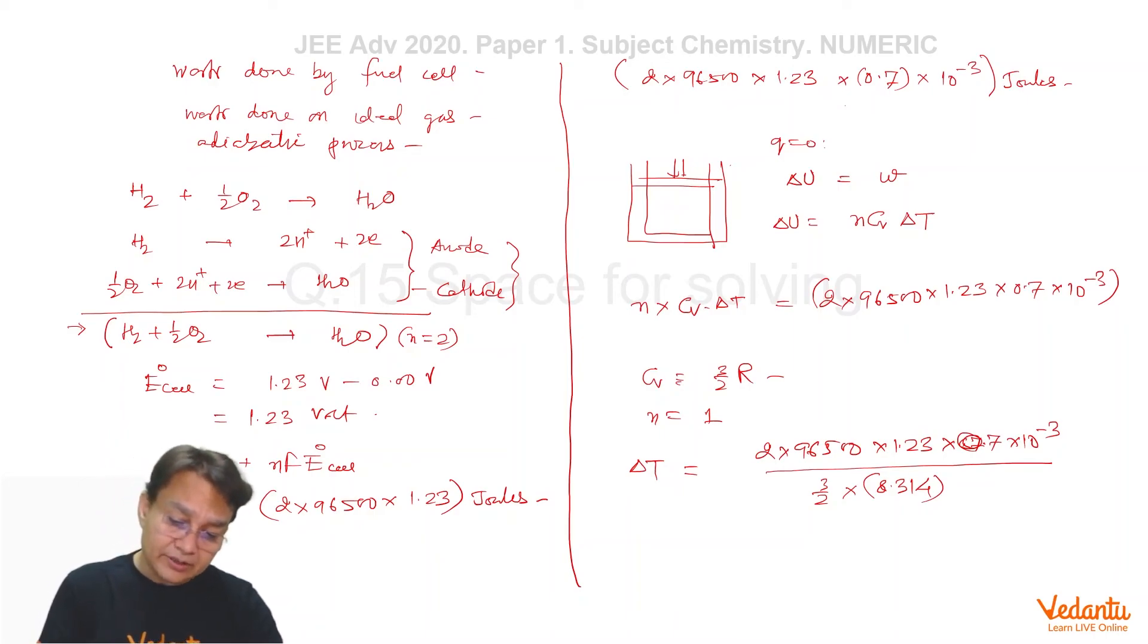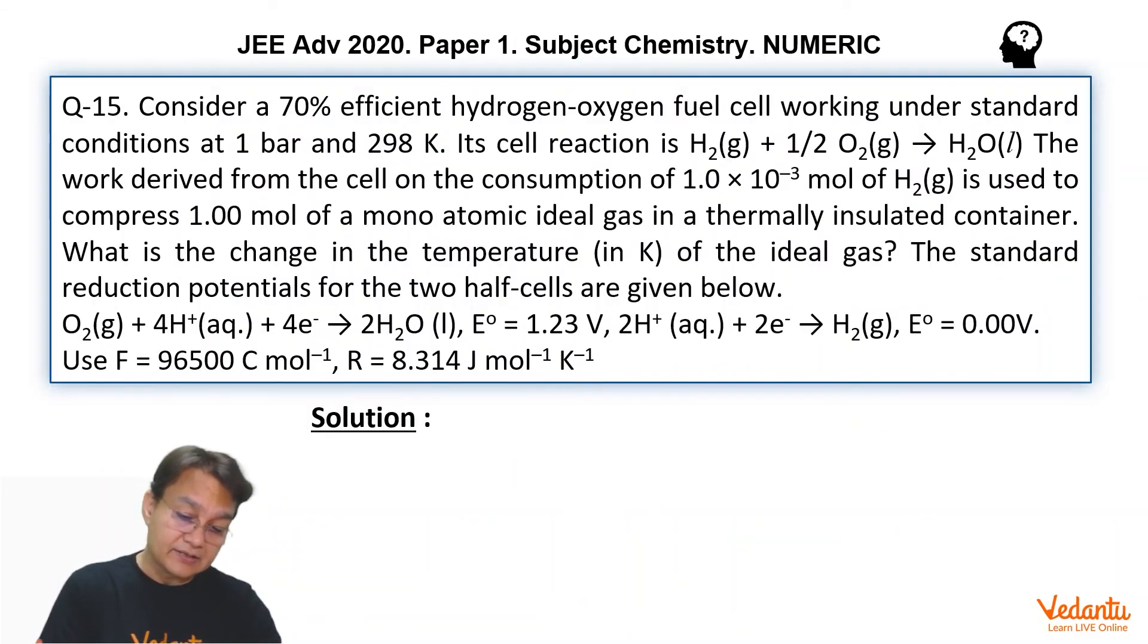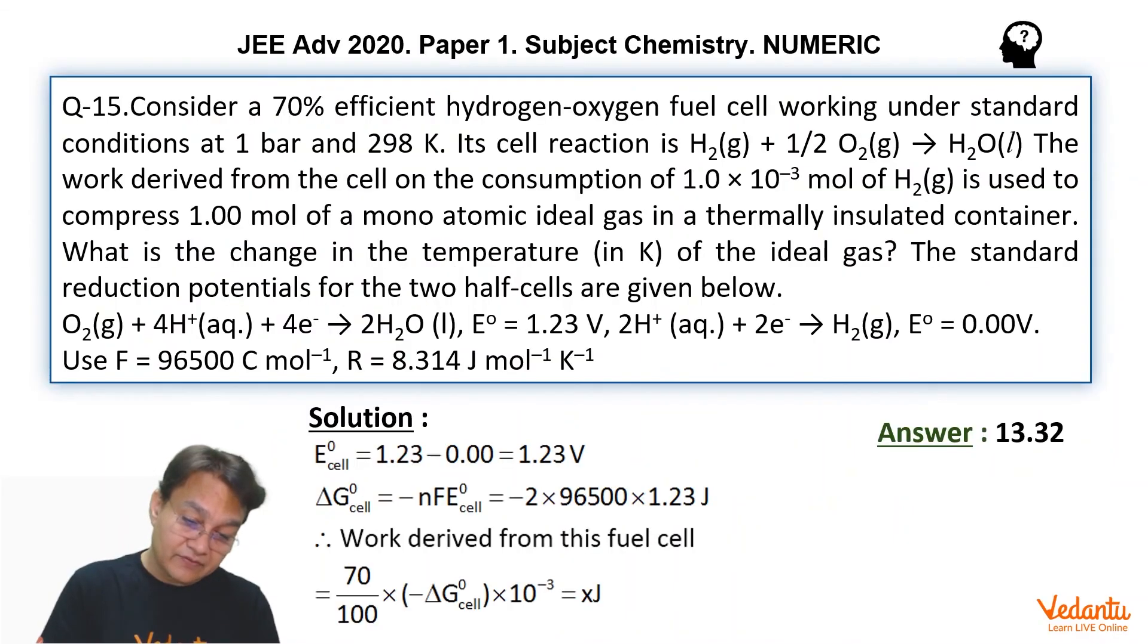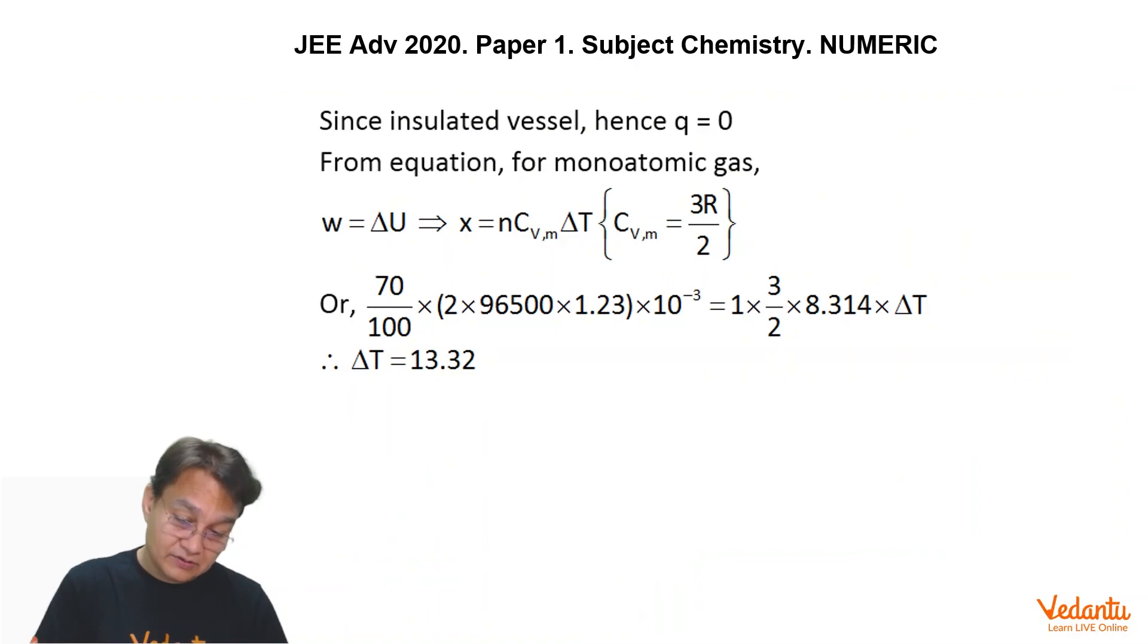A bit calculator heavy, I would say, a bit calculator equation is a numerical problem. And as we have to solve it, it will consume a lot of time. Two concepts have been blended, thermodynamics and as well as electrochemistry. Good question. And the final answer is 13.32. So if you solve it, we will get the final answer is 13.32. That's the calculation, that's the breakup, you solve it like this.